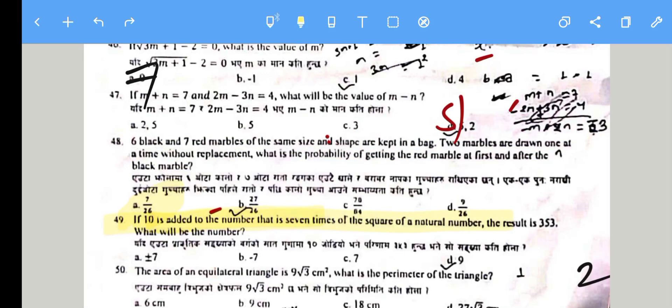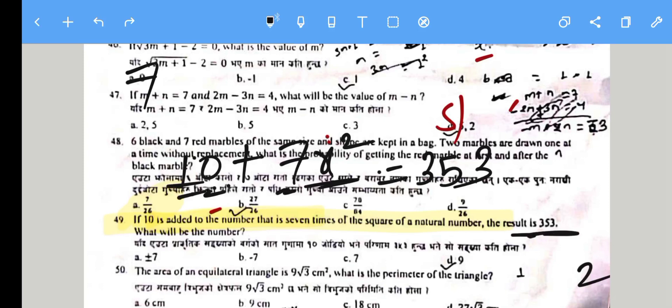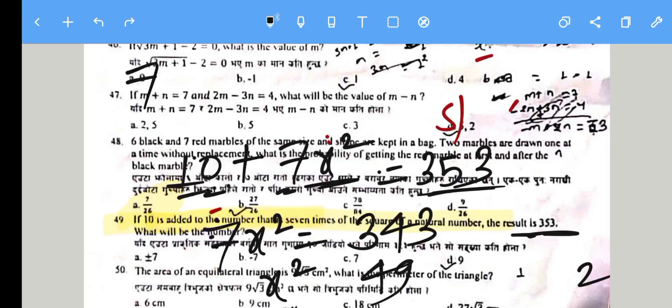Question: 10 is added to a number that is 7 times a square number, giving 353 as the result. So 7x² + 10 = 353, which means 7x² = 343. Therefore x² = 49, so x = 7.